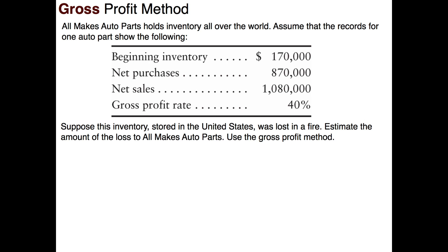The first thing we want to do is take the information we already know and put it into the tools we have to come up with our ending inventory. Those tools are our inventory T account and our income statement — specifically the gross profit income statement.